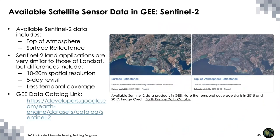Sentinel-2 data is also available through Earth Engine, including top-of-atmosphere and surface reflectance products. Applications are really similar to Landsat, but with notable differences: Sentinel-2 has higher spatial resolution and a shorter revisit time — imaging the same place on Earth about every five days — but less temporal coverage, with data really starting only in 2015. There are always trade-offs when considering different sensors. In our exercise today for the Bolivia example, you'll have the ability to modify the script to use either Landsat or Sentinel-2 imagery.